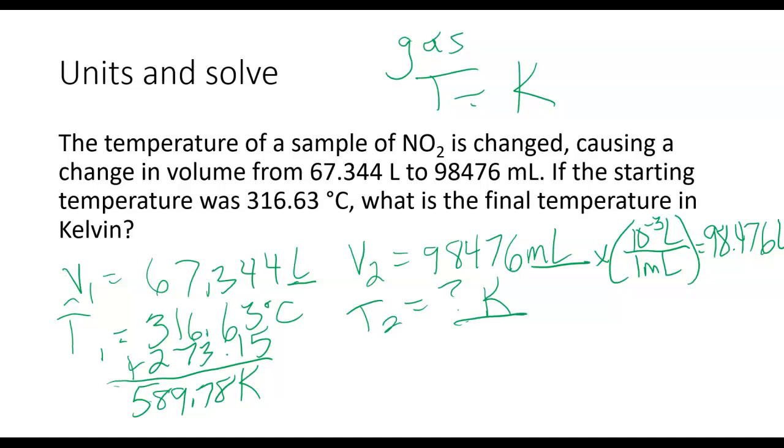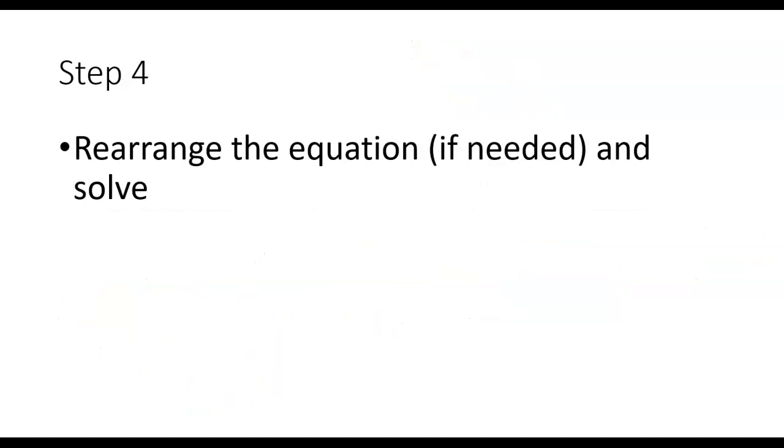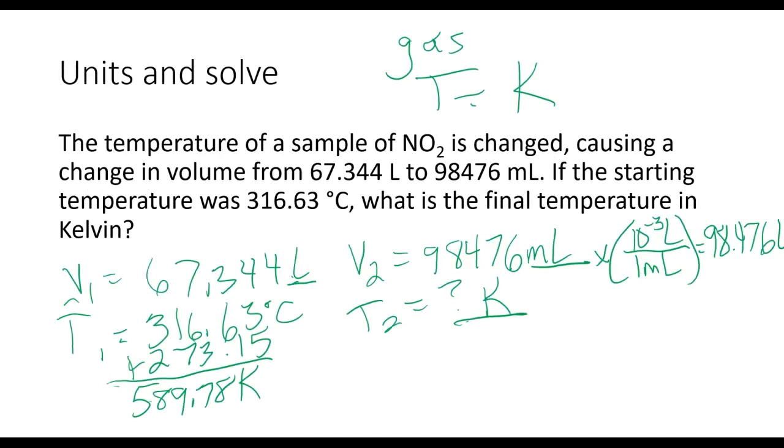So I've got everything in the same unit - liters to liters, Kelvin to Kelvin. My last step is going to be rearranging the equation, if needed, and solving. So if I look back at my equation, I have V1 over T1 is equal to V2 over T2. I'm trying to solve for T2. So I need to make sure that T2 is by itself. Notice T2 is at the bottom of my fraction here. So I'm going to multiply both sides by T2 first to get it out of my fraction.